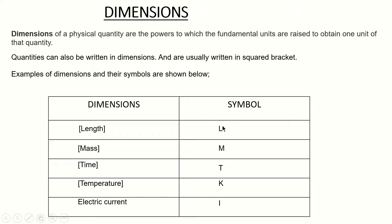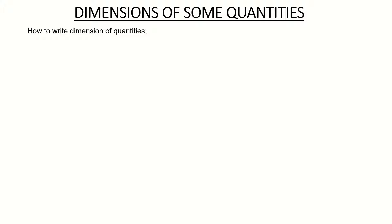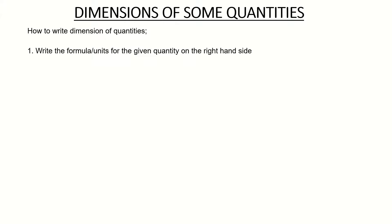Please note that for dimensions we put them in square brackets and write the symbols in capital letters. I will now show how to write dimensions of physical quantities. In this video I will show three steps. The first step is to write out the formula or the units for that given quantity on the right-hand side.